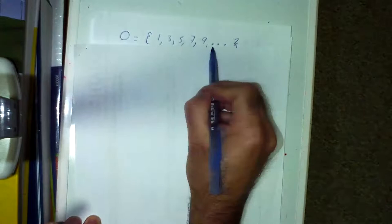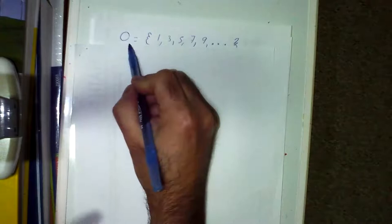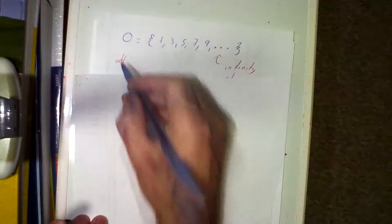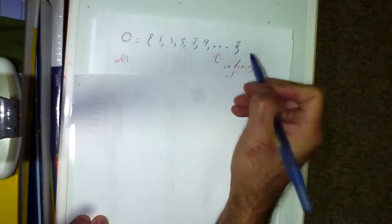We have another set: O equals {1, 3, 5, 7, 9, …}. The O represents odds. Those three little dots at the end mean infinity — it just keeps going: 11, 13, and so on. We don't have to list them all; we put three dots to designate it goes on to infinity.